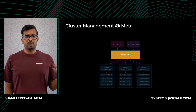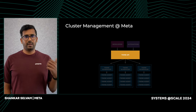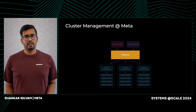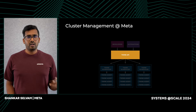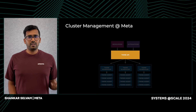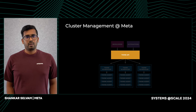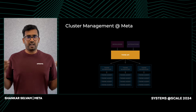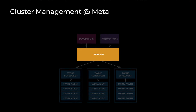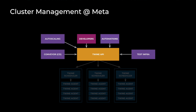The focus of this talk is going to be primarily on the Twine API component. Developers and production engineers use the Twine CLI to perform operational changes on their jobs, whereas automation systems build on top of the Twine API to provide higher level abstractions such as auto-scaling, continuous deployment, and many more. We set the foundation for all of Meta to interact with their jobs.